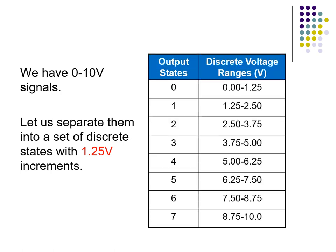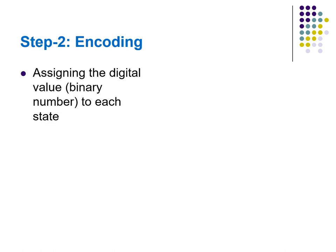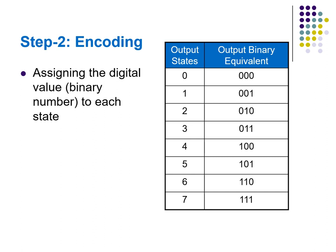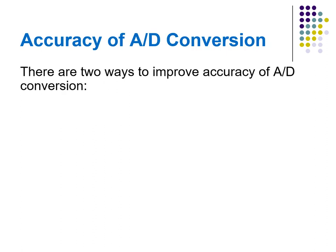We have 0–10 volt signals. Let us separate them into a set of discrete states with 1.25-volt increments. As shown in the table: state 0 represents 0 to 1.25 V, state 1 represents 1.25 to 2.5 V, state 6 represents 7.5 to 8.75 V, and state 7 represents 8.75 to 10 V. Step 2 — encoding: we assign 3-bit digital codes to the output states, so 0 is encoded as 000, 1 as 001, and 7 as 111.